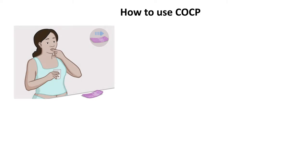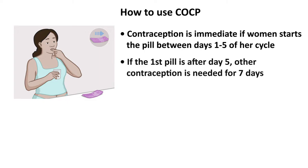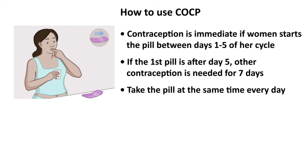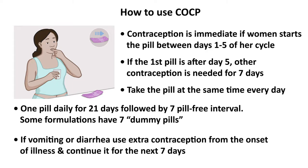How to use combined oral contraceptive pills: contraception is immediate if the woman starts the pill between day 1 and 5 of her cycle. If the first pill is taken after day 5, other contraception is needed for 7 days. Take the pill at the same time every day — one pill daily for 21 days followed by a 7-pill-free interval. Some formulations have 7 dummy pills. If vomiting or diarrhoea occurs, use extra contraception from the onset of illness and continue for the next 7 days.